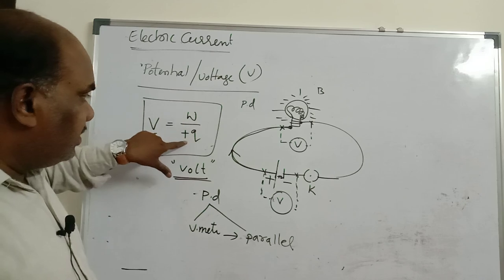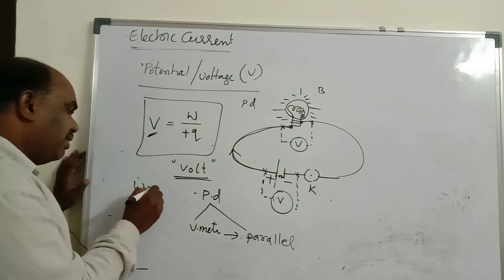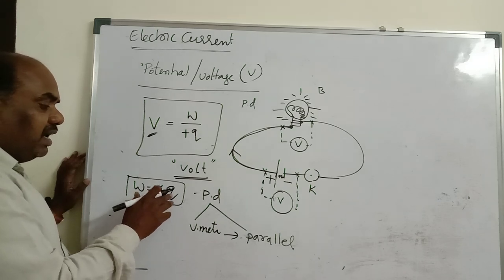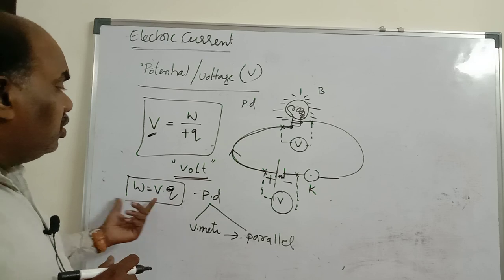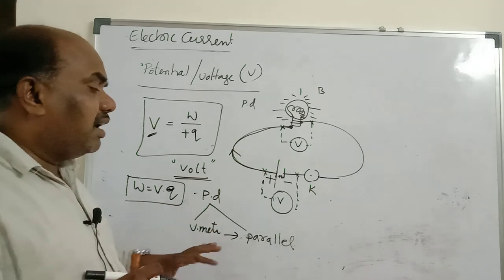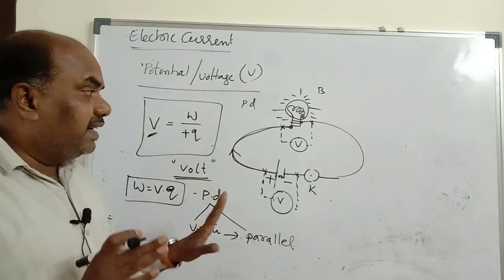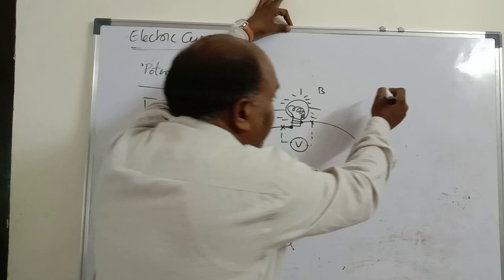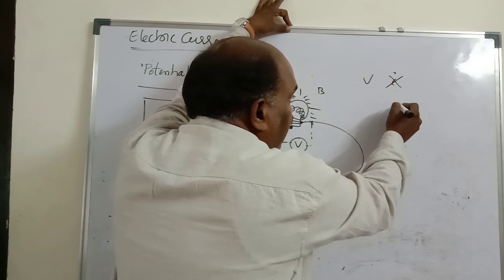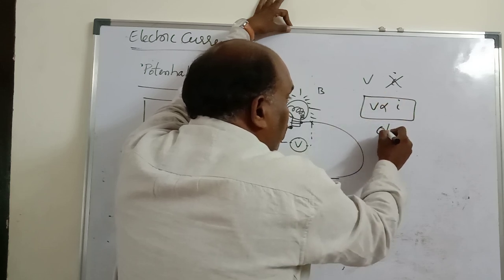Potential unit is volt. To measure potential difference we use a voltmeter, which must be connected in parallel. There is no current without voltage — this is very important. The relation between current and voltage was given by the scientist Ohm, which we will see in Ohm's law.